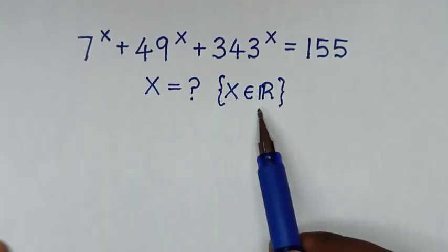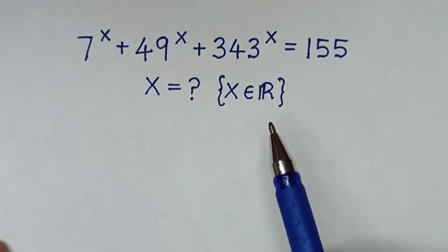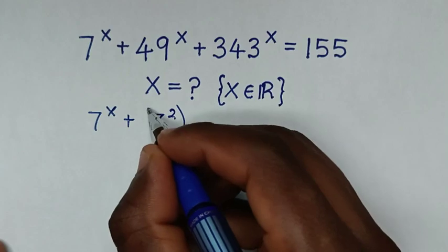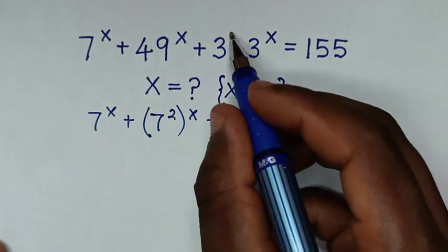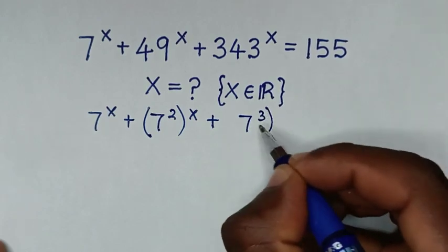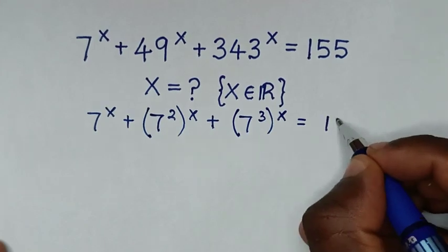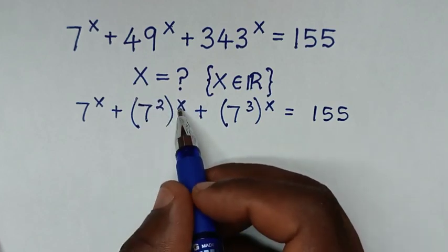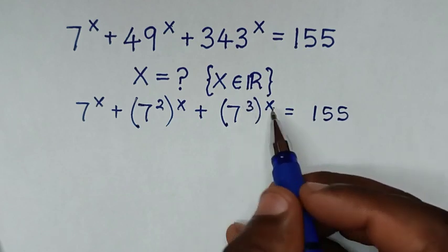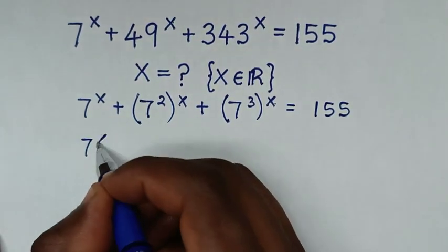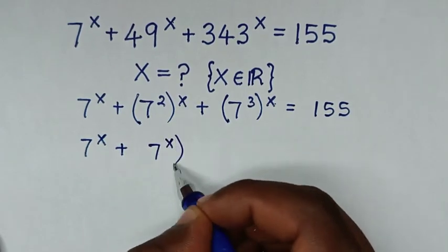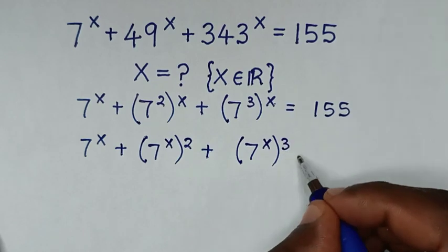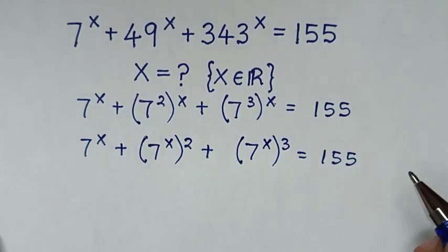To find the value of x, where x is an element of the real numbers. We rewrite: 49 is the same as 7 squared, and 343 is the same as 7 power 3. Exchanging the exponents, it becomes 7 power x plus 7 power x bracket power of 2 plus 7 power x bracket power of 3 is equal to 155.